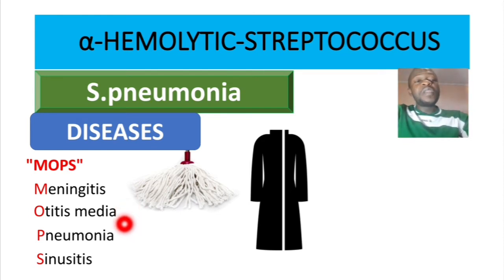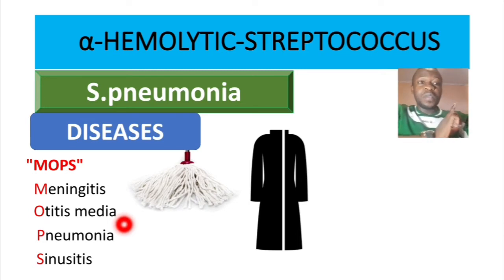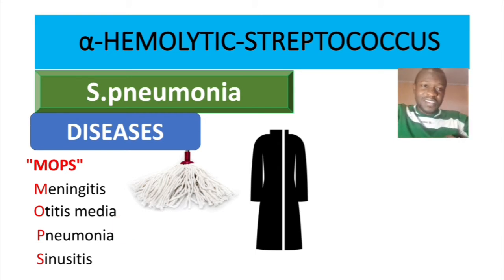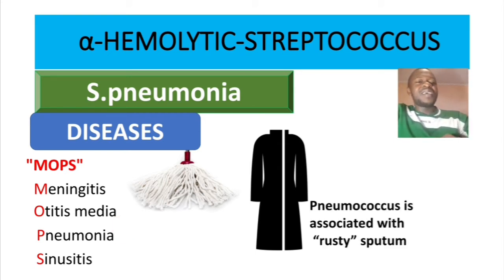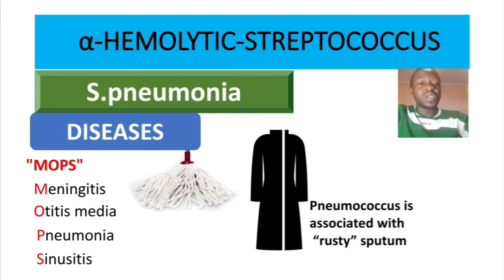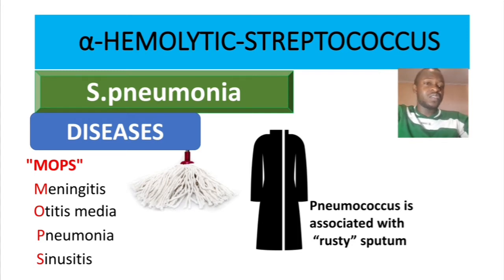Regarding pneumonia, Streptococcus pneumoniae is the number one cause of community-acquired pneumonia. As an additional point, pneumococcal infection is associated with rusty sputum. If you see rusty sputum, suspect pneumococcus. Pneumococcus is the same as Streptococcus pneumoniae, and the sputum looks characteristically rusty-colored.